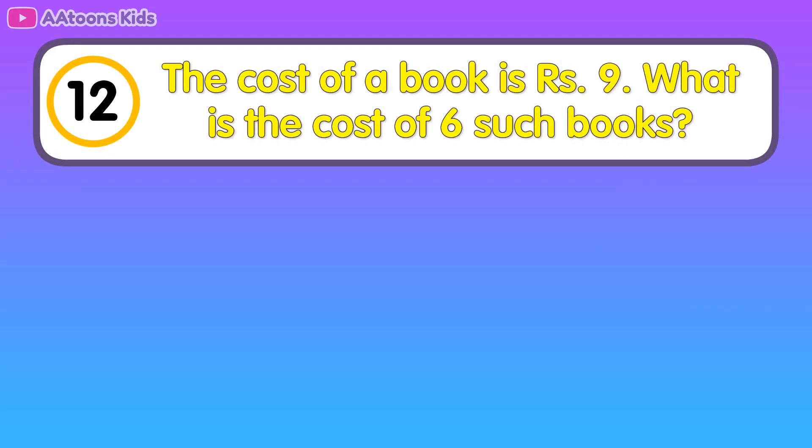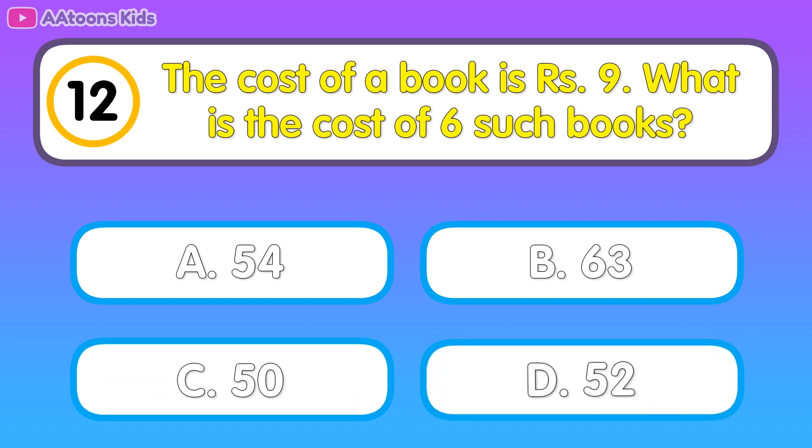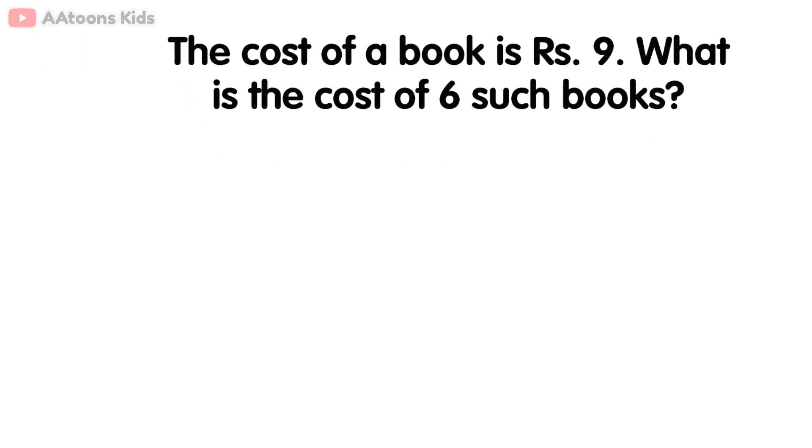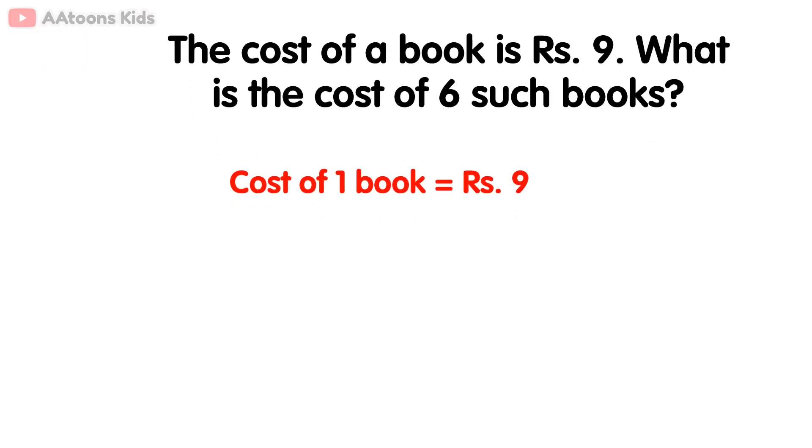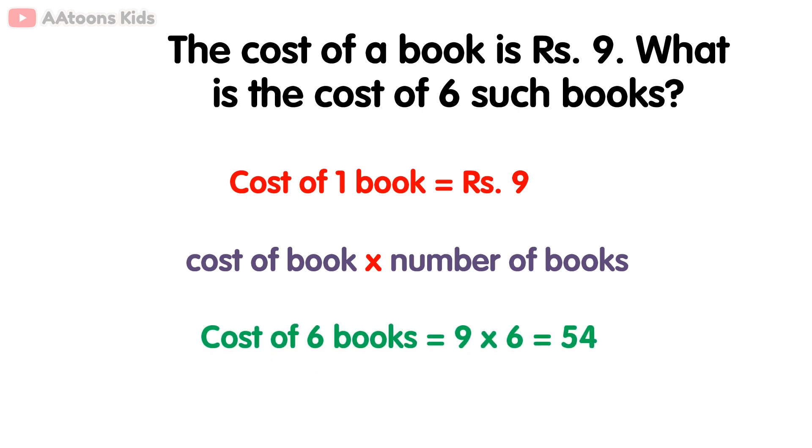The cost of 1 book is Rs 9. What is the cost of 6 such books? 54. The cost of 1 book is Rs 9. To find out the cost price, simply multiply cost of book by the number of books. 9 multiplied by 6 is Rs 54. So the cost of 6 books is Rs 54.